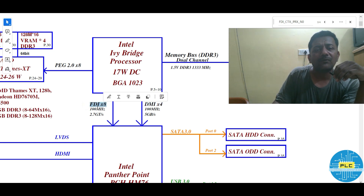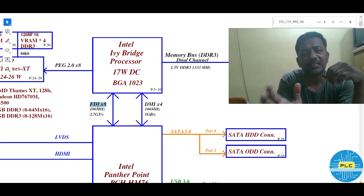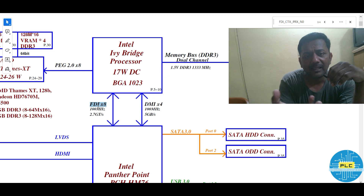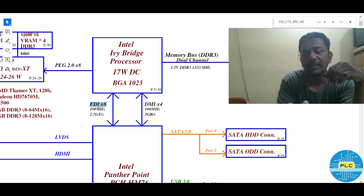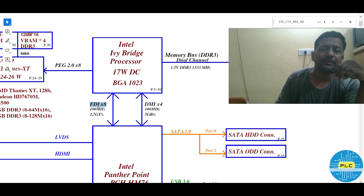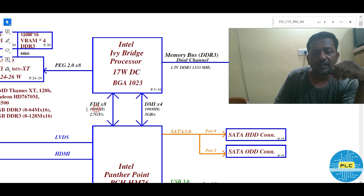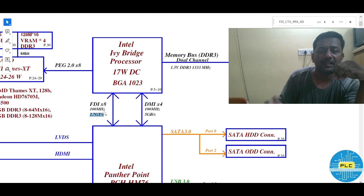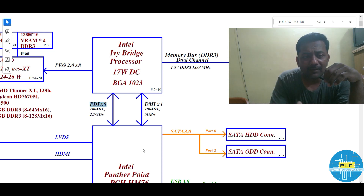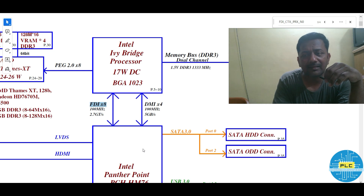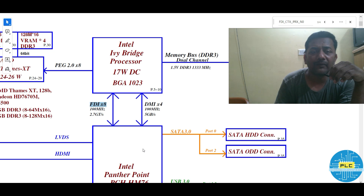FDI — Flexible Display Interconnection. In the name itself it is there — display interconnectivity with the display unit. The data works through 100 MHz; it has 2.7 GT per second — that is the speed it has. The FDI, Flexible Display Interconnection, connects the display engine which is in the processor from the PCH.